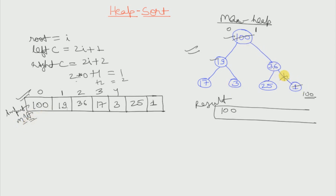Since we have replaced and unlinked 100 from 36, what we will do next is max heapify the root. Max heapify will check among the root and its left and right child — whichever is the largest will take the position of the root. For this root element we have three elements in consideration: 1, 19 and 36. Since 36 is the largest, 36 will come to the root position and the root element will be replaced.